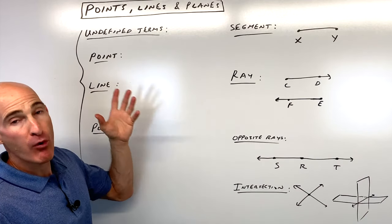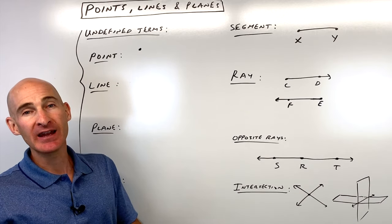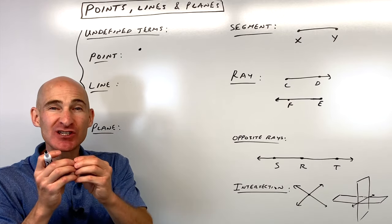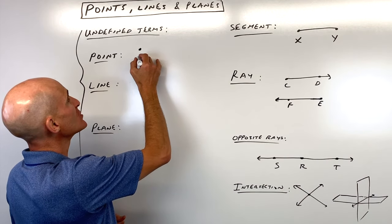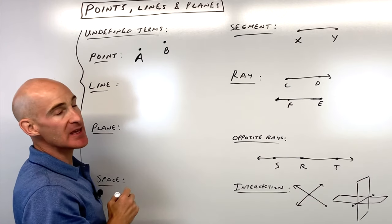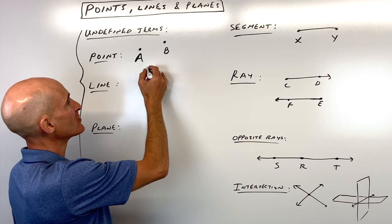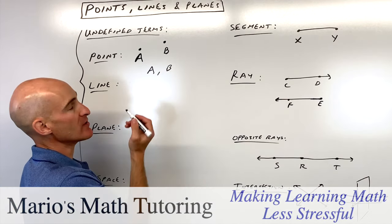The first thing is a point, and a point basically we represent in geometry as a dot. It's basically infinitesimally small, but it just locates a point in space. And so what we do is we just label it with a capital letter like A, or you can have another point over here, B. So you would just say if you're identifying the point, you would just say point A or point B.